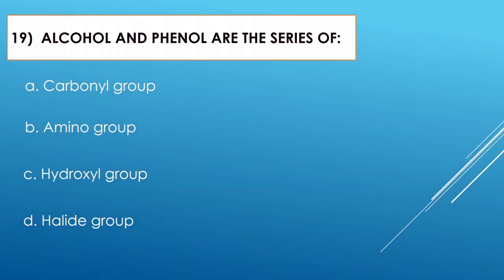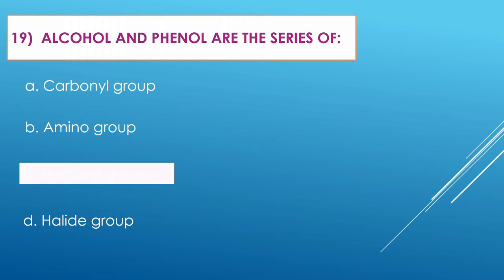Question number nineteen: Alcohol and phenol are the series of which group? Option A: carbonyl group. Option B: amino group. Option C: hydroxyl group. Option D: halide group. The correct option is hydroxyl group.